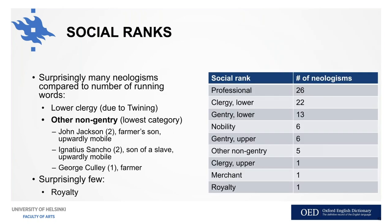Widening the focus, let's look at social ranks. People are ordered by the number of neologisms per social rank. We've got professional people like lawyers and authors first, but when we compare to the running words from these groups, it's the lower clergy who seems to have surprisingly many new words — mostly due to Thomas Twining. Then it's the lowest social category of "other non-gentry" which has surprisingly many: people like John Jackson the farmer's son, Ignatius Sancho who was the son of a slave and very upwardly mobile, and a farmer, George Cully. We've got a lot of letters from royalty, but only one new word from them.